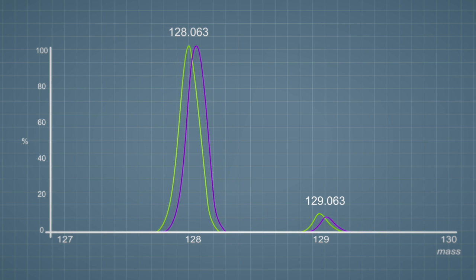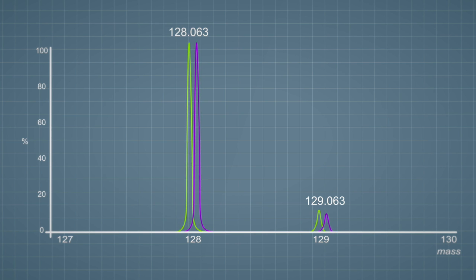That precision allows the potential molecular formula to be narrowed down to only a few possibilities. Not only does this improve the confidence the peak detected is the compound of interest, it also reduces the risk of contaminants interfering with the results.